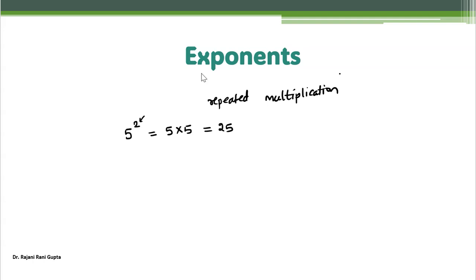Similarly, if I say 2 power 4, what does it mean? It means the number 2 is multiplied 4 times. So it is 2 multiplied 2 multiplied 2 multiplied 2 — that is 4 times — and what does it become? 16.